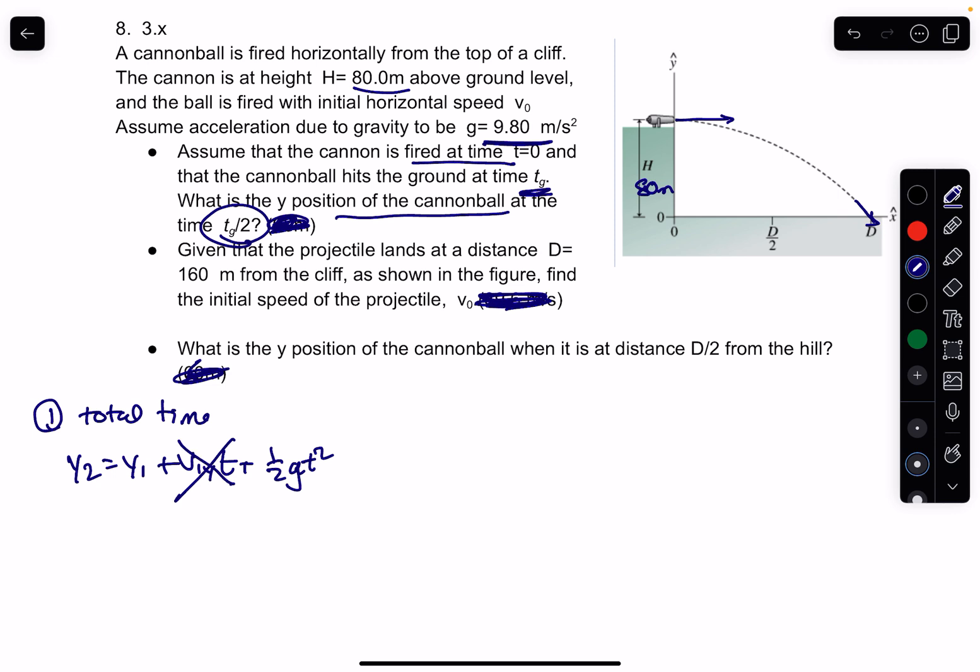Now the acceleration, since it's only moving in the x direction initially, the total speed in the y direction is 0. And so what's y2? y2 is 0, y1 is 80, and I can solve for time.